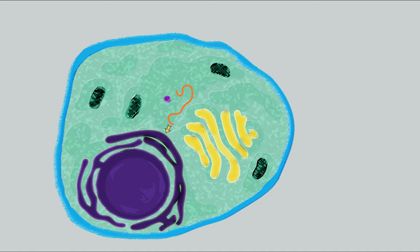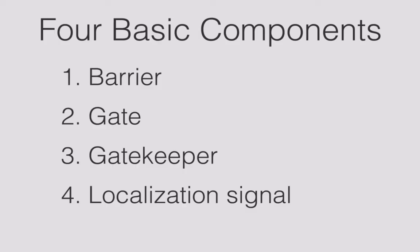Though transport to each of these organelles will look slightly different, there are four basic components that are present in all protein transport.